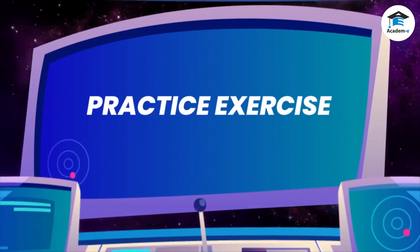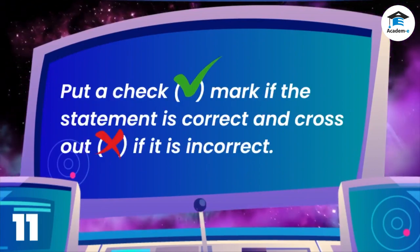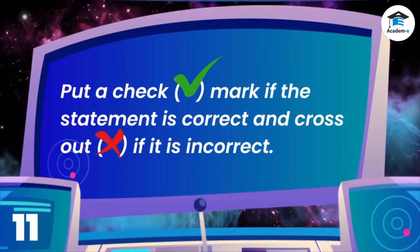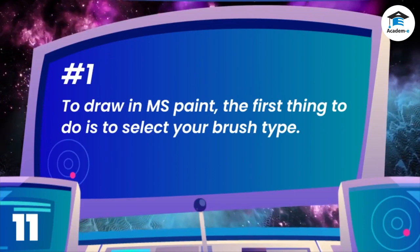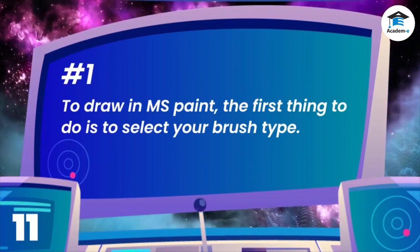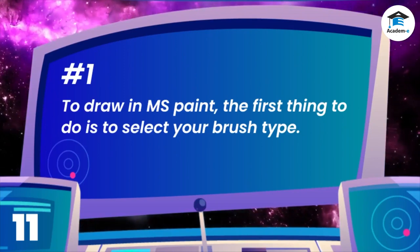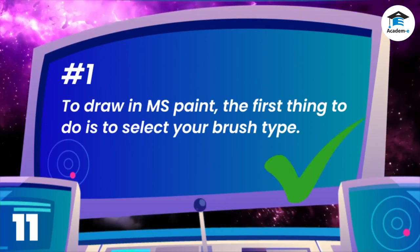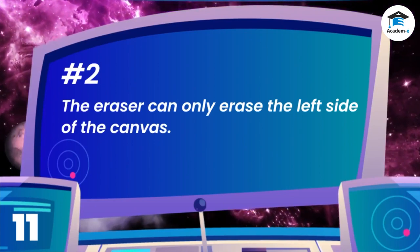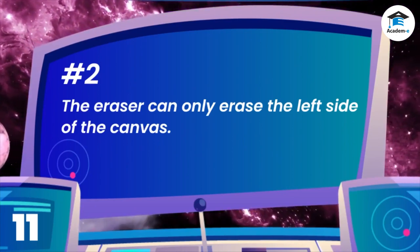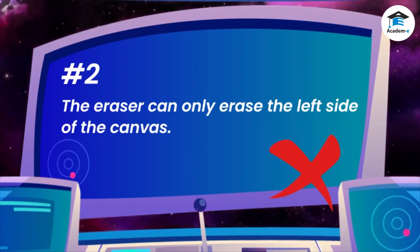Practice Exercise: Put a checkmark if the statement is correct, and cross out if it is incorrect. 1. To draw in MS Paint, the first thing to do is to select your brush type. This statement is correct. 2. The eraser can only erase the left side of the canvas. The eraser can be used in any portion of the canvas.